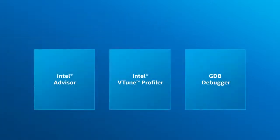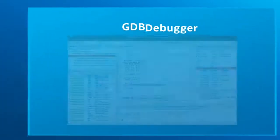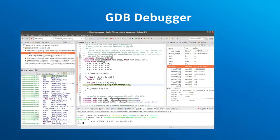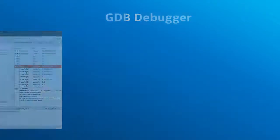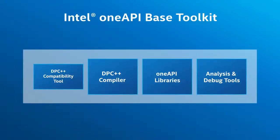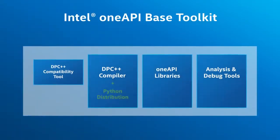The toolkit has a GDB debugger enhanced by Intel for cross-architecture debug support of DPC++ and other languages. The base toolkit also includes the optimized Intel distribution for Python and additional performance libraries.